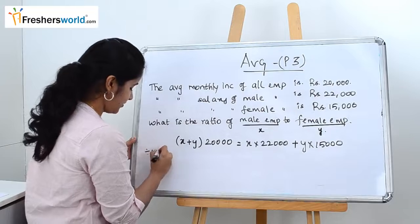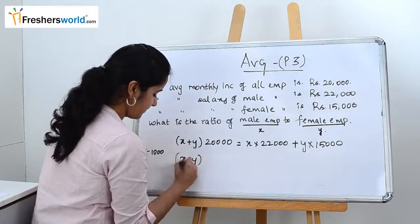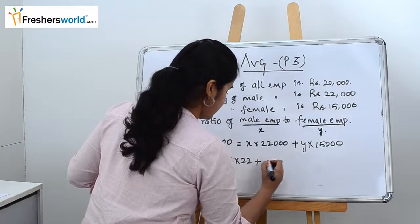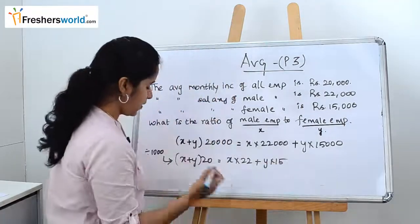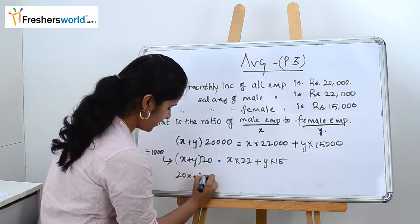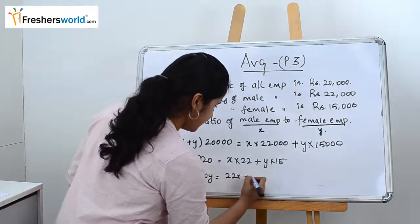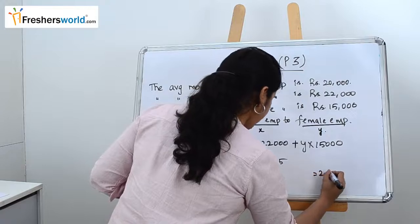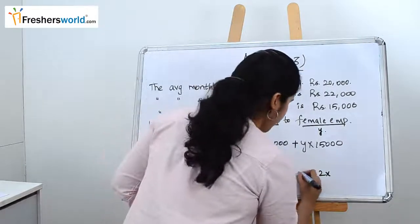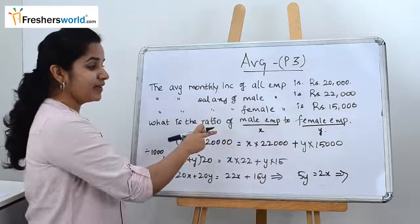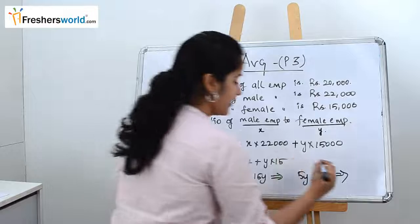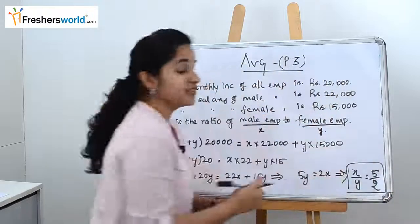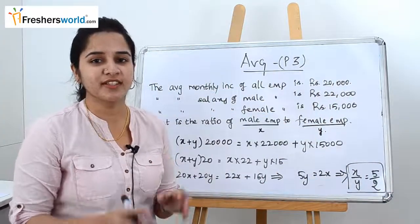Dividing by 1000: (x + y) into 20 equals x into 22 plus y into 15. Expanding: 20x plus 20y equals 22x plus 15y. Rearranging: 5y equals 2x, so x by y equals 5 by 2. The ratio of male employees to female employees in the company is 5:2.